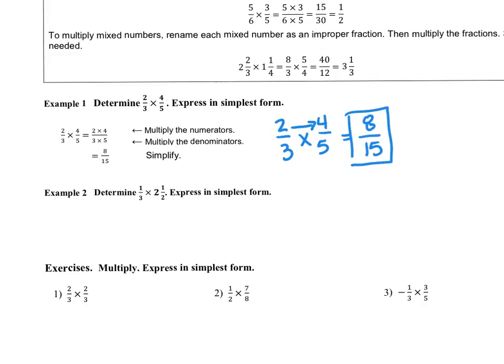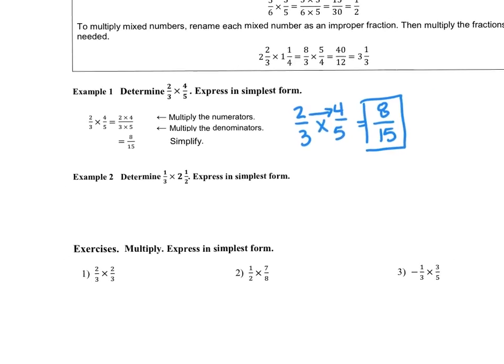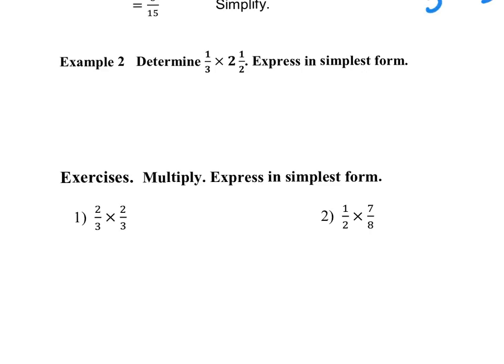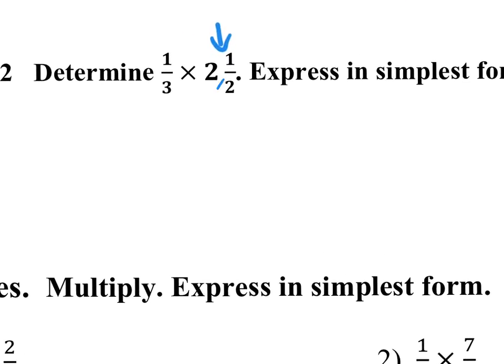I think people find multiplying and dividing easier if they remember the rules. So let's look at this next one: 1/3 times 2 and 1/2. When we have a mixed number, this is a mixed number right here, we have to change it to improper first. So I'm going to Texas it. 2 times 2 is 4. 4 plus 1 is 5. So, 1/3 times 5/2. Now we're just going to multiply straight across. 1 times 5 is 5. 3 times 2 is 6. And we're done. Pretty simple, right?